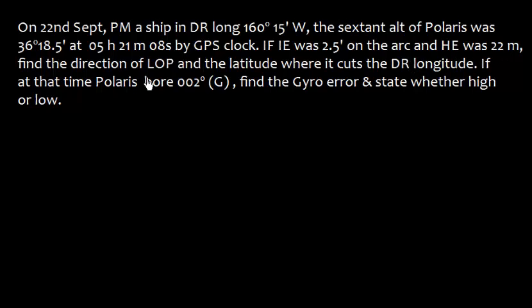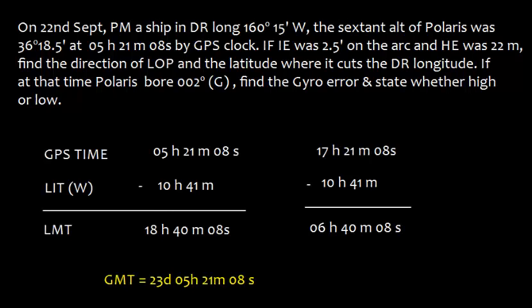We need to find the direction of LOP (line of position) and the latitude where it cuts the DR longitude. If at that time Polaris bore 002 degrees by gyro, then find the gyro error and state whether the gyro is high or low.